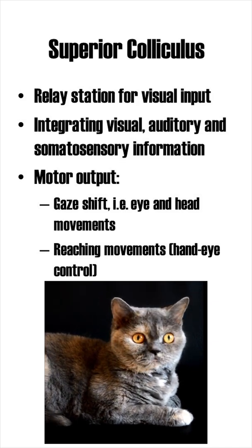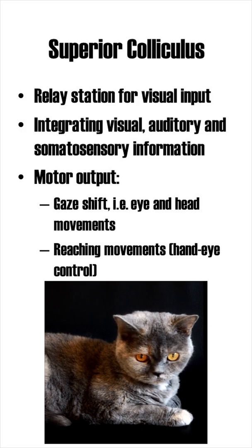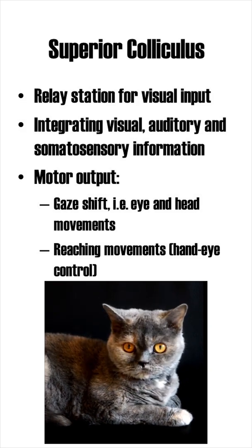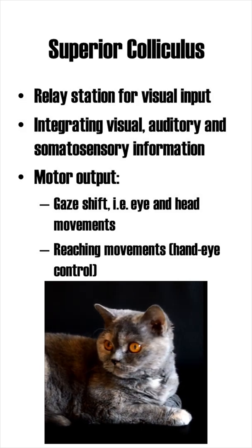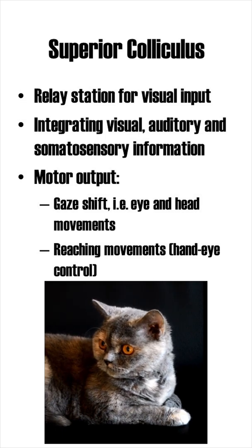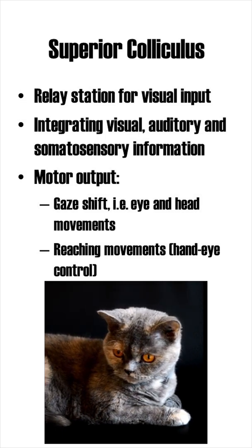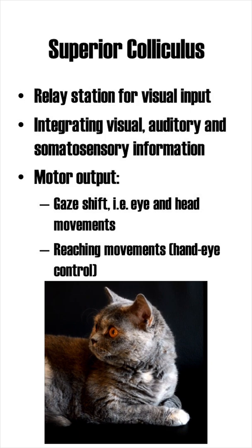This visual and non-visual information is used by the superior colliculus to initiate gaze shifts, meaning eye and head movements. But the superior colliculus is also involved with other motoric output, such as reaching movements, suggesting a role in hand-eye control.